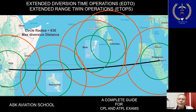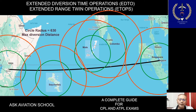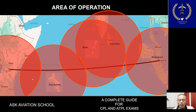After obtaining EDTO certification, another circle is drawn using the maximum diversion distance — the distance flyable within 90 or 120 minutes of maximum diversion time. The larger red circle, with a radius of 630 nautical miles from Nairobi, Seychelles, Male, Colombo, and Singapore, overlaps with the others. This means the aircraft can fly from Nairobi to Singapore on this route, which becomes the EDTO route. The area enclosed by the red circles is known as the area of operation of that EDTO flight.